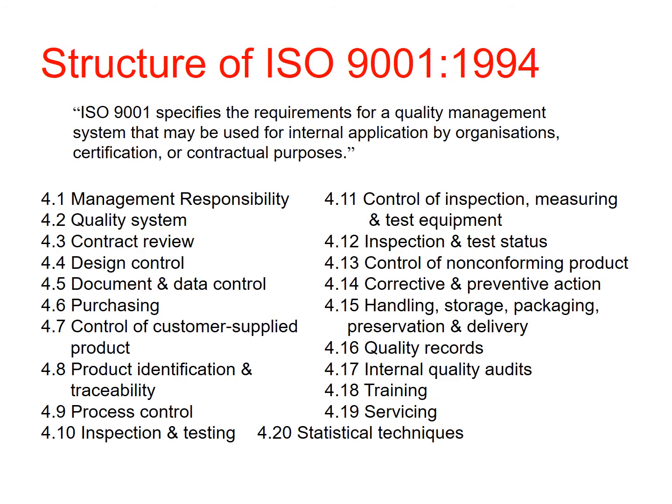ISO 9001 specifies the requirements for a quality management system that may be used for internal application by organisations, certification or contractual purposes. The 1994 version contains twenty detailed elements covering management responsibilities, quality systems, contractual review, and more. If you go to work for an organisation that has ISO standards, you would expect to see and find all those different documents, helping you understand how your organisation is running quality management systems.